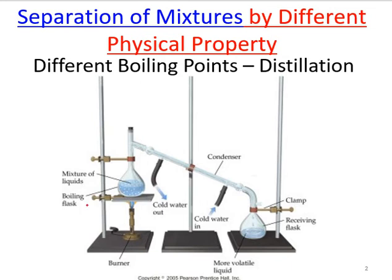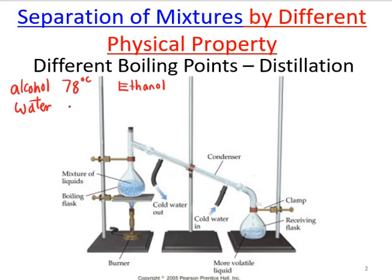Assume we have alcohol and water in the mixture. The boiling point for alcohol — specifically ethanol, the most commonly used alcohol in the chemistry lab — is 78 degrees Celsius. The boiling point of water is 100 degrees Celsius. So if I have this mixture and start heating it, the temperature is going to rise.